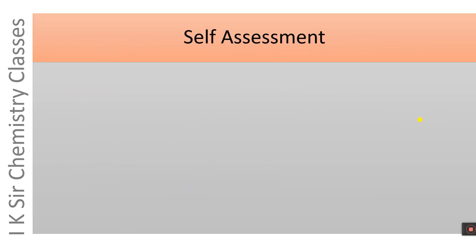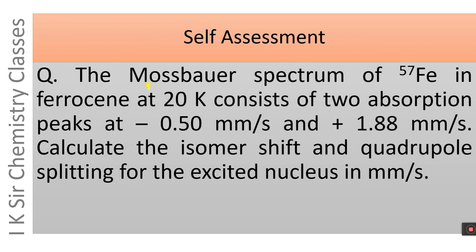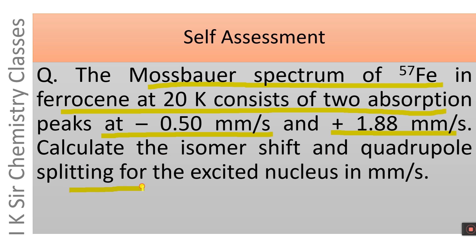Now, time for a self-assessment. The Mössbauer spectrum of Fe-57 in ferrocene at 20 K consists of two absorption peaks: one at minus 0.50 mm/s relative velocity and another at plus 1.88 mm/s. Calculate the isomer shift and quadrupole splitting for the excited nucleus in mm/s. Please pause the video and try to solve it within five minutes.